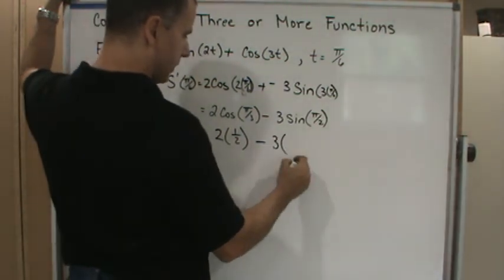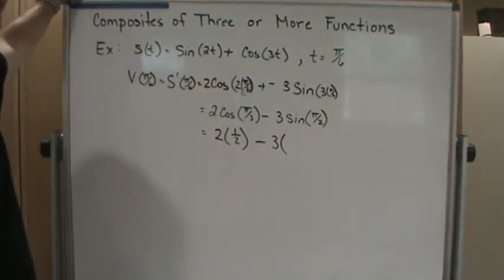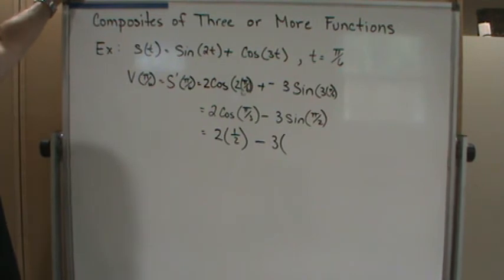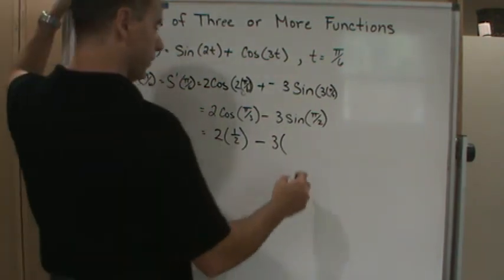Minus 3 times the sine of π/2, which is a 90-degree angle. The sine of π/2 is just 1.